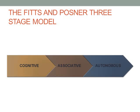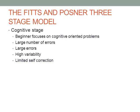First, the learner goes through the cognitive stage. This is when they're really beginners, and this stage is high in cognitive load — meaning how much your conscious mind is working. Beginners focus on cognitively oriented problems: what they have to do and strategies for how to do it. Because cognition is quite slow, this stage is characterized by slow movements or mistimed actions, and there tends to be a large number of large errors, along with high variability.